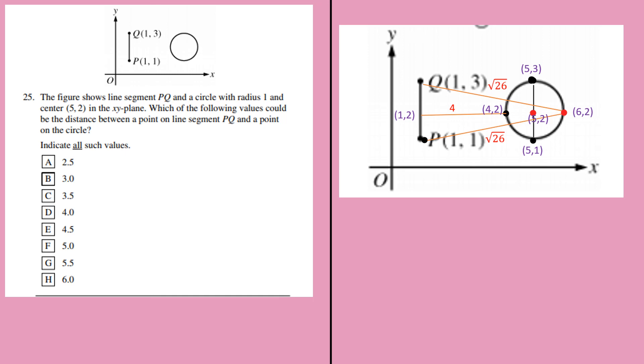The midpoint of the line is 1, 1. We have to find the distance between this line segment and the point on the circle. So the minimum distance will be the distance between the midpoint and the point 4, 2, which is 3.